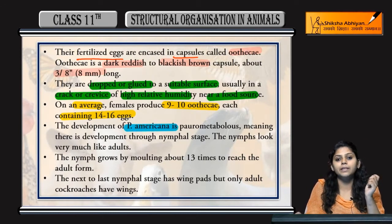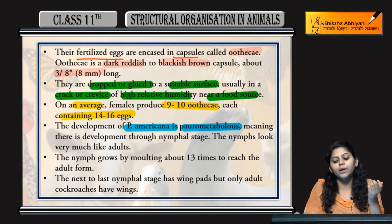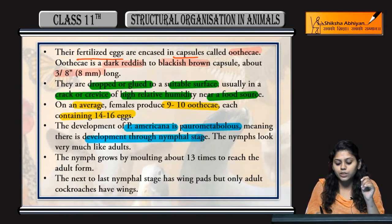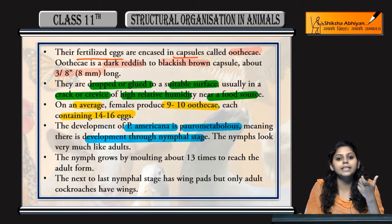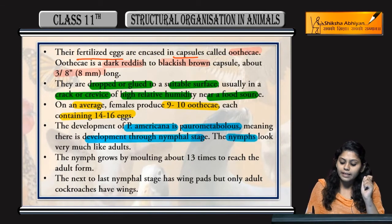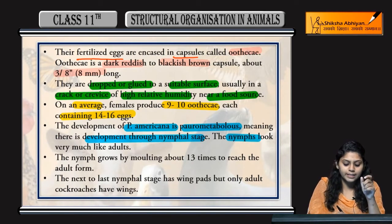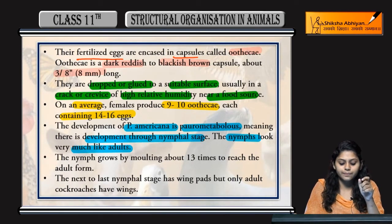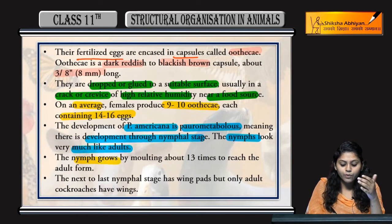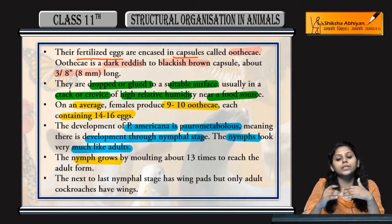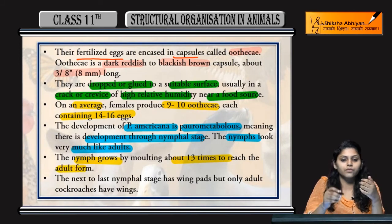The development of Periplaneta americana is paurometabolous, meaning development occurs through a nymphal stage. The nymph looks very much like the adult. The nymph grows by molting about 13 times to reach the adult form.